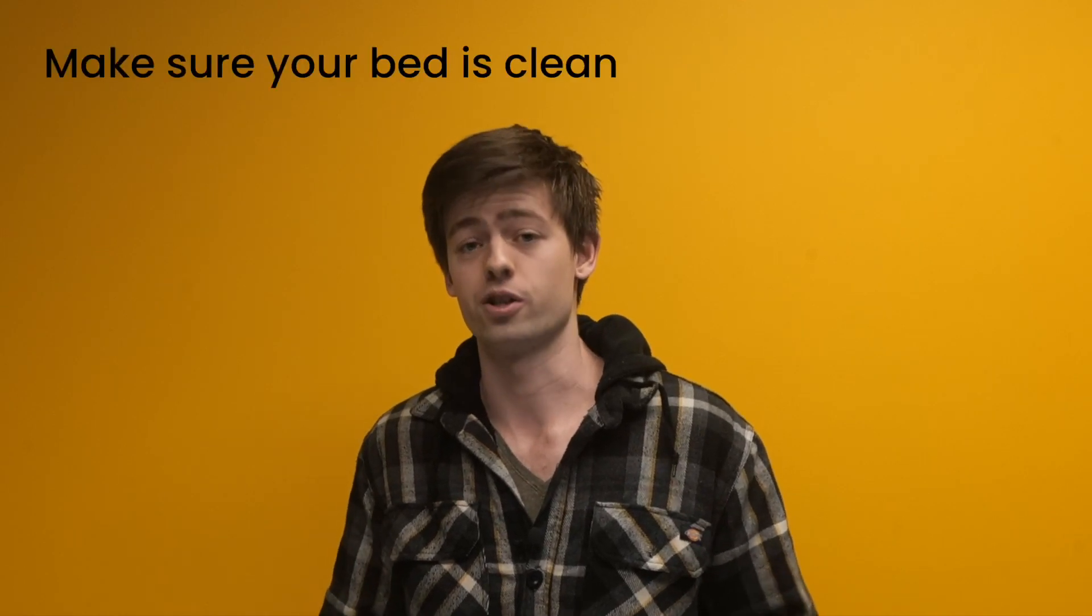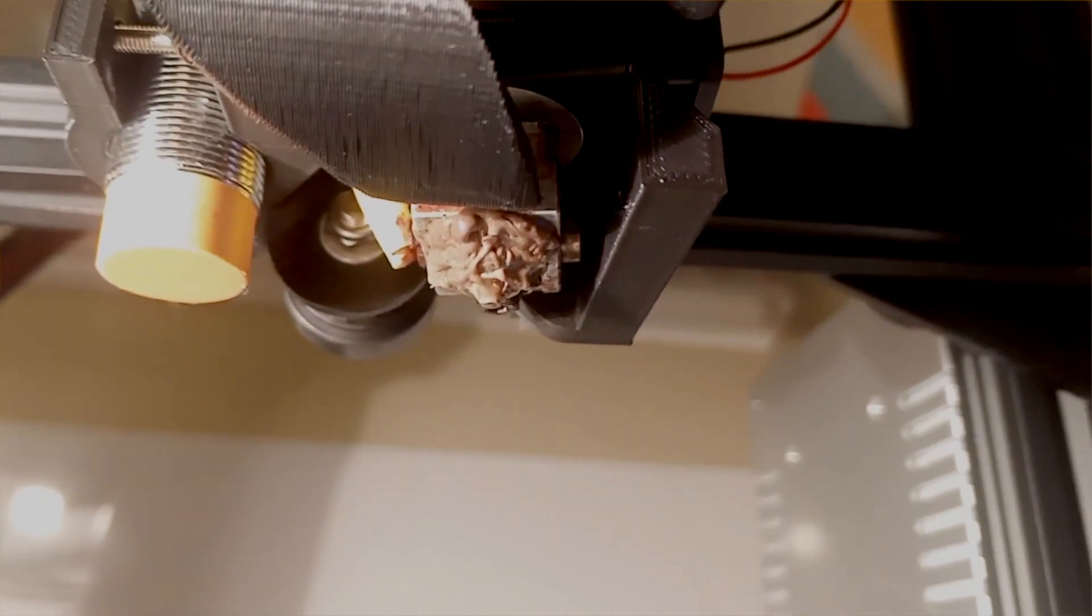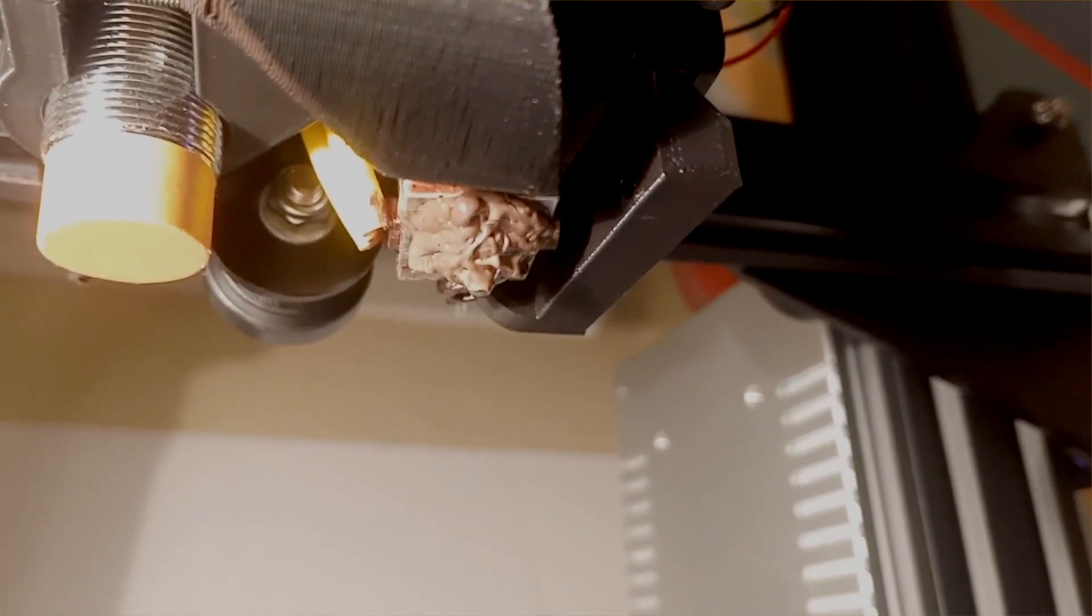You also want to make sure that the bed is clean and free from dust and oils. Finally, you're going to want to check your nozzle and hot end assembly every once in a while, just to make sure that everything's tight and that you're not leaking filament, because that can sometimes cause a nozzle blob too.